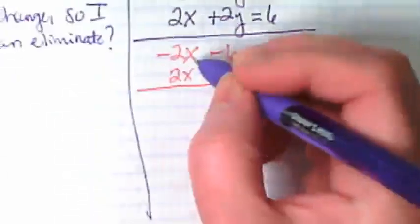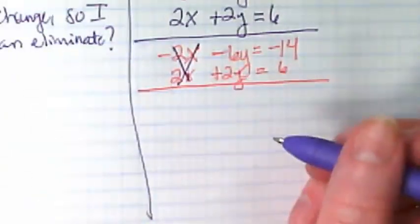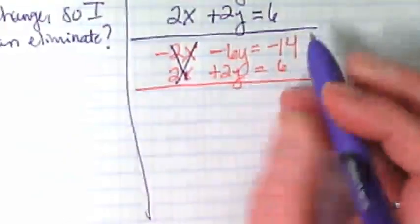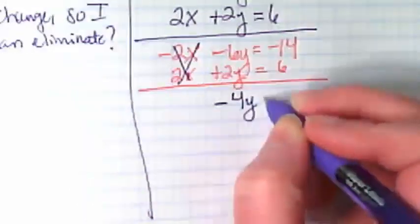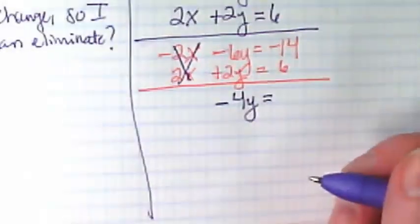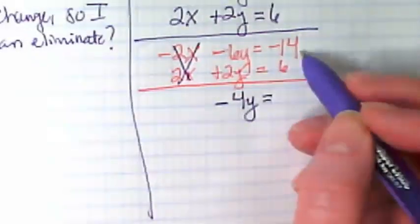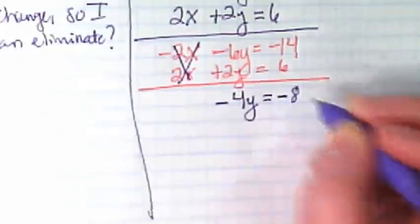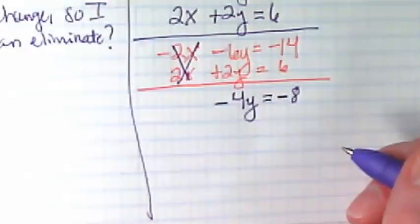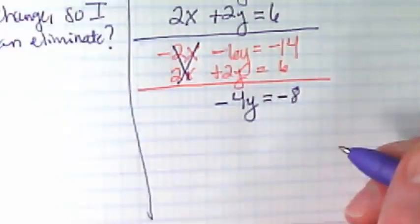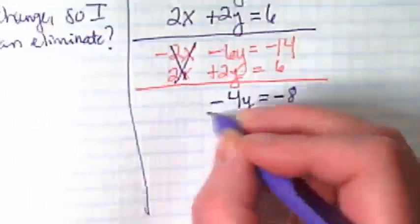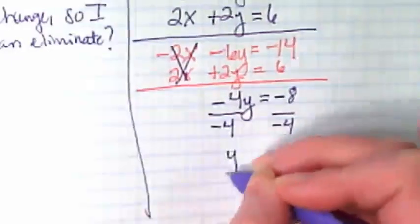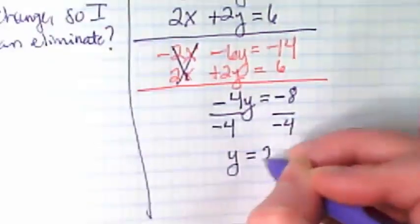I can get rid of my X's. That leaves me with negative 6Y plus 2Y. That's negative 4Y. Negative 14 and positive 6 is going to leave me with negative 8. I divide by negative 4, Y is equal to 2.